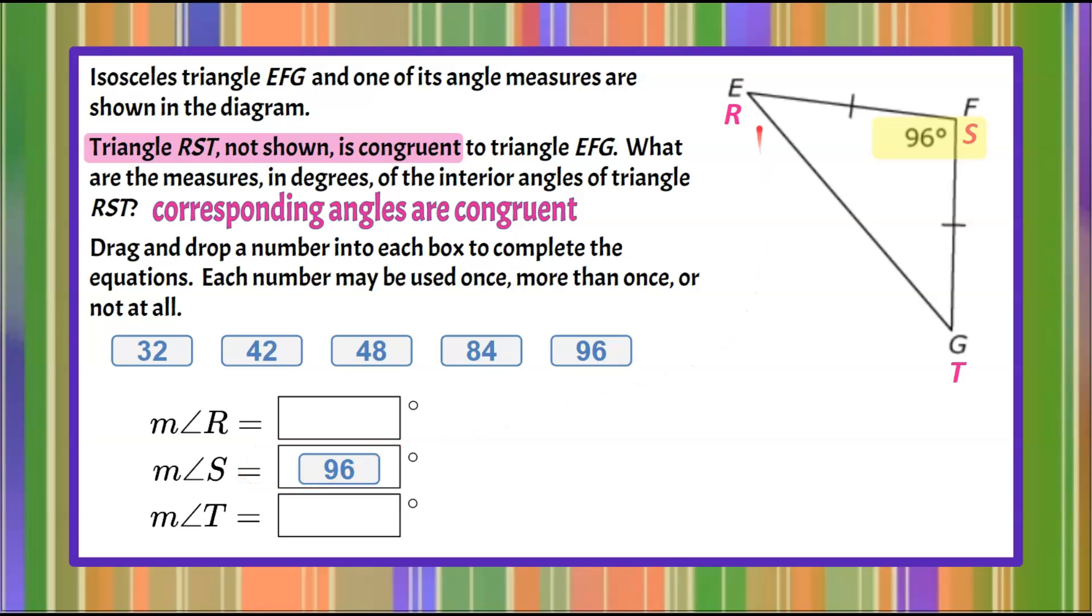Now we need to find the measures of angle R and angle T. We are told that this is an isosceles triangle telling us that two sides are congruent. If these two sides are congruent that means these two angles are also congruent. So they have one pair of congruent sides and one pair of congruent angles.